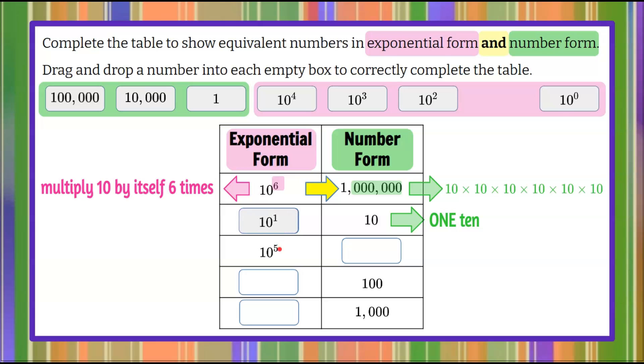All right, 10 to the 5th. So we now need to find something in number form that is equivalent to 10 to the 5th, which would be 10 multiplied by itself five times—a 1 and 5 zeros. Here we have a 1 and 5 zeros. You could look at it this way: 1 ten, 2 tens, 3, 4, 5 tens. We're going to drag and drop that hundred thousand over to this box because it has the five zeros.